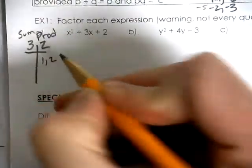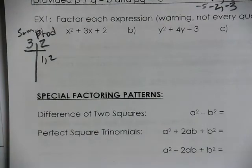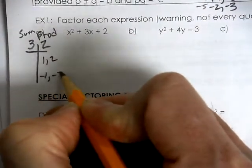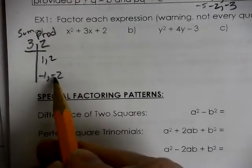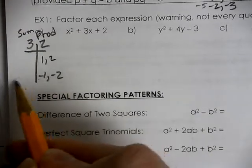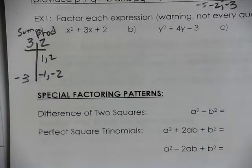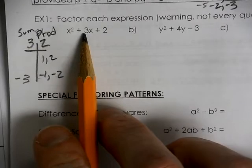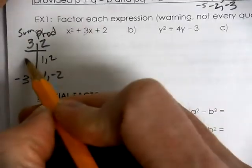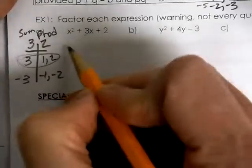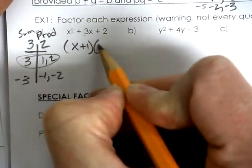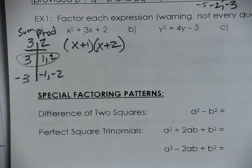We're looking for two things that multiply to be 2 that will also add to be 3. Well really, there's only one way we can multiply to be 2. You might consider negative 1 and negative 2 to be an option, but those two numbers are going to add to be a negative. We're looking for a positive 3. So that's why we're going to use a positive 1 and a positive 2 in our parentheses to make two binomials.